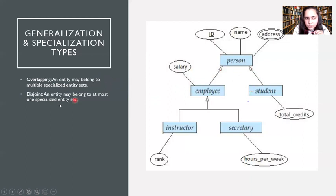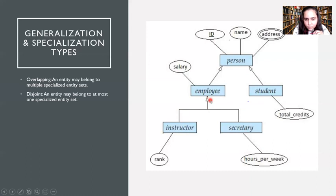A disjoint specialization applies when talking about instructor and secretary — we know that an instructor would not also be a secretary. There won't be any entity value present in both tables. They may have common attributes, but no common entity between the two. This is shown using a single hollow arrow that splits into two at the lower level.